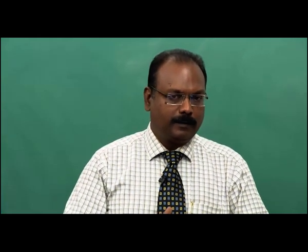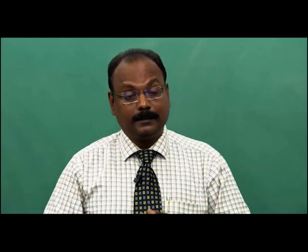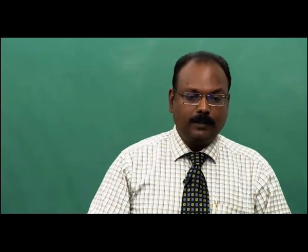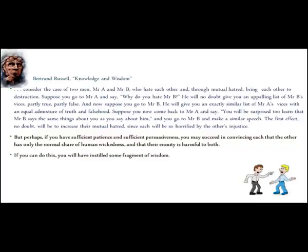All human beings have a good side and a bad side — vices and virtues. If you tell them that it is normal for any human being to have these kinds of limitations which they have been exaggerating, the other person can realize that their enmity is going to be very harmful and you will be able to bring harmony to the relationship. This is an interesting tip Russell gives about conflict resolution. He says if you can do this, you will have instilled some fragment of wisdom in those people — and remember, at the end of each conflict resolution, you become wiser and happier.